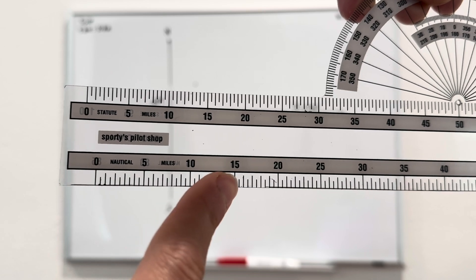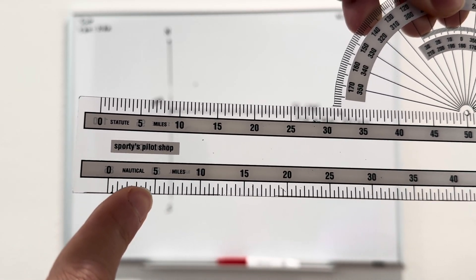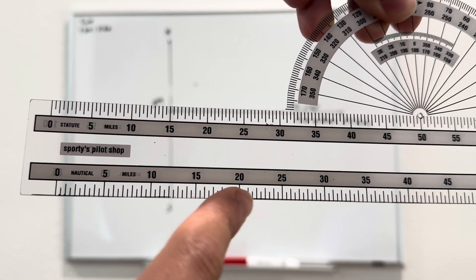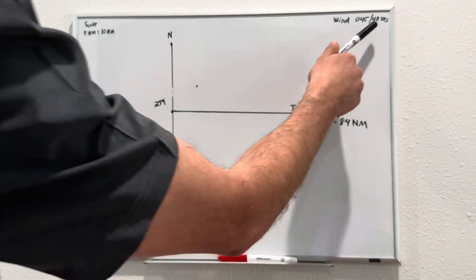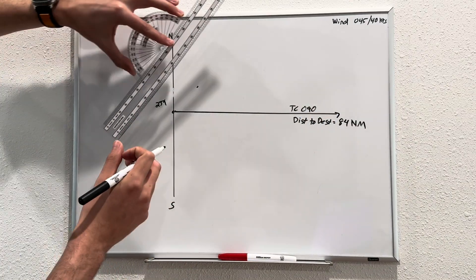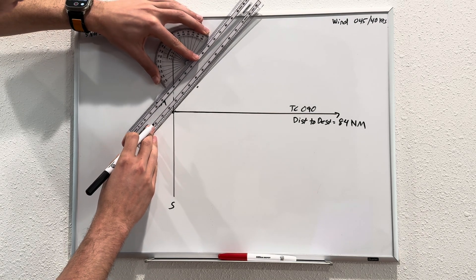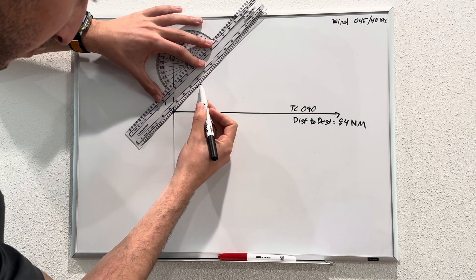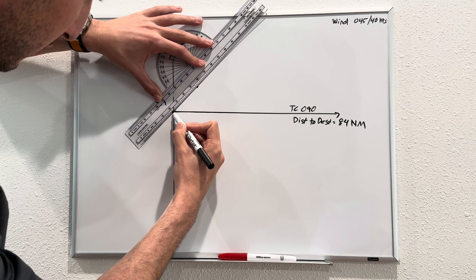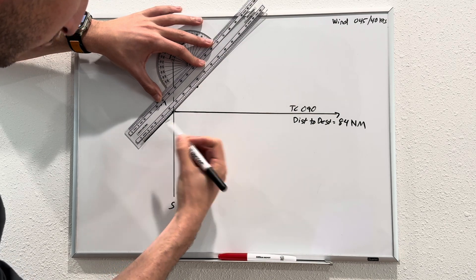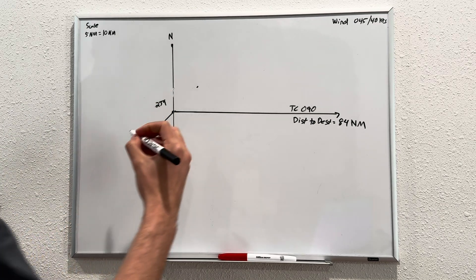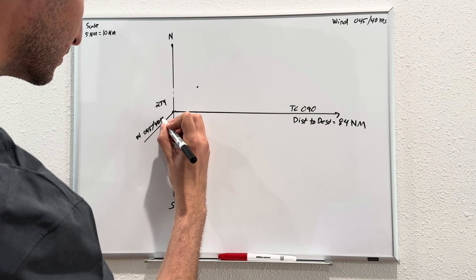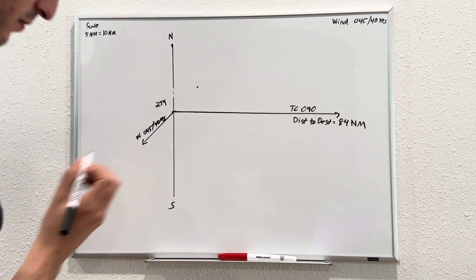Our scale is going to be a 5 nautical mile to 10 nautical mile scale. We have 0, 5, 10, 15, 20. So for every 5 nautical miles, it's actually going to be 10. So that's 10, 20, 30, 40, 50. Our wind is at 40 knots. So let's line this up, 40 knots. We have a 2 to 1 scale. We've lined ourselves up with the angle of the wind, and we're going to draw out 40 knots.